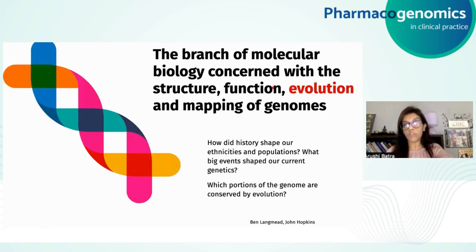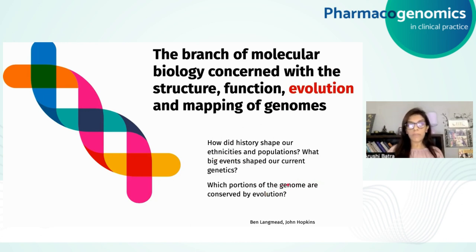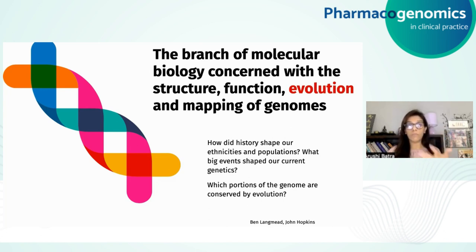Once we know the function of the human genome, we also have to look at evolution. With respect to evolution, we ask: how did history shape our ethnicities and populations, what big events shaped our current genetics, and what portions of the genome are conserved by evolution? We are talking about how genomes themselves change over very long evolutionary time periods. From having sequenced many individual human genomes, we know that all of us are nearly identical to one another, and most changes from generation to generation are small and random, hardly having an effect.